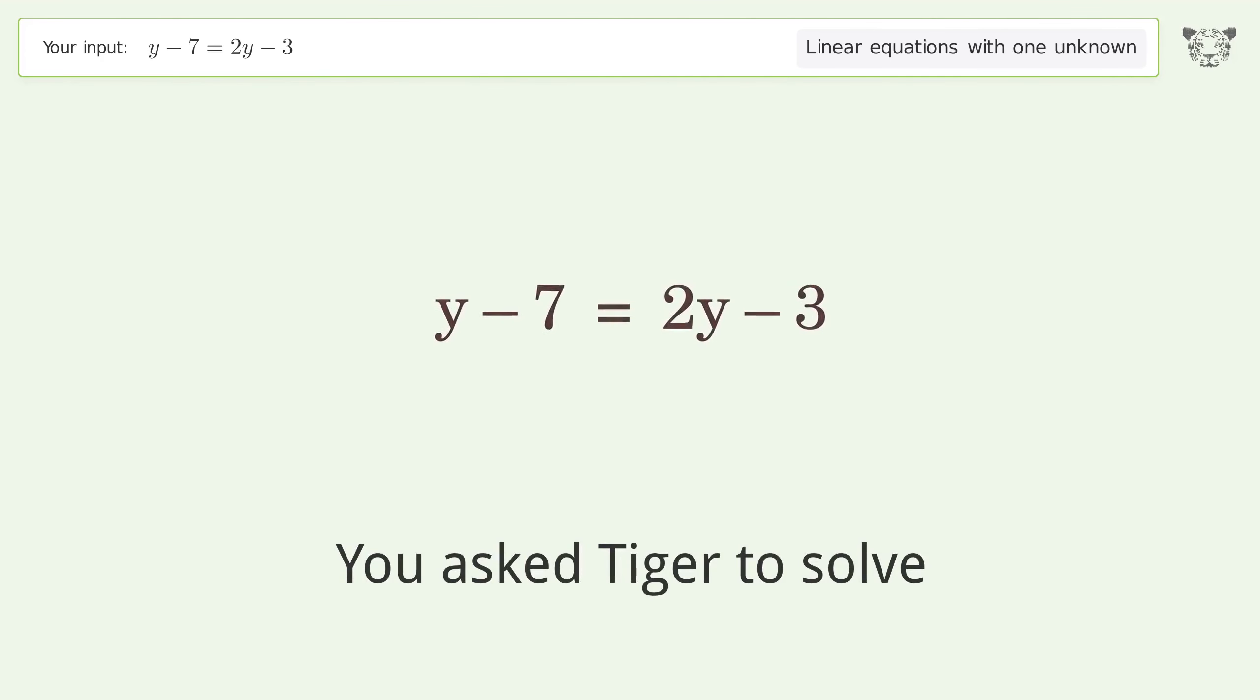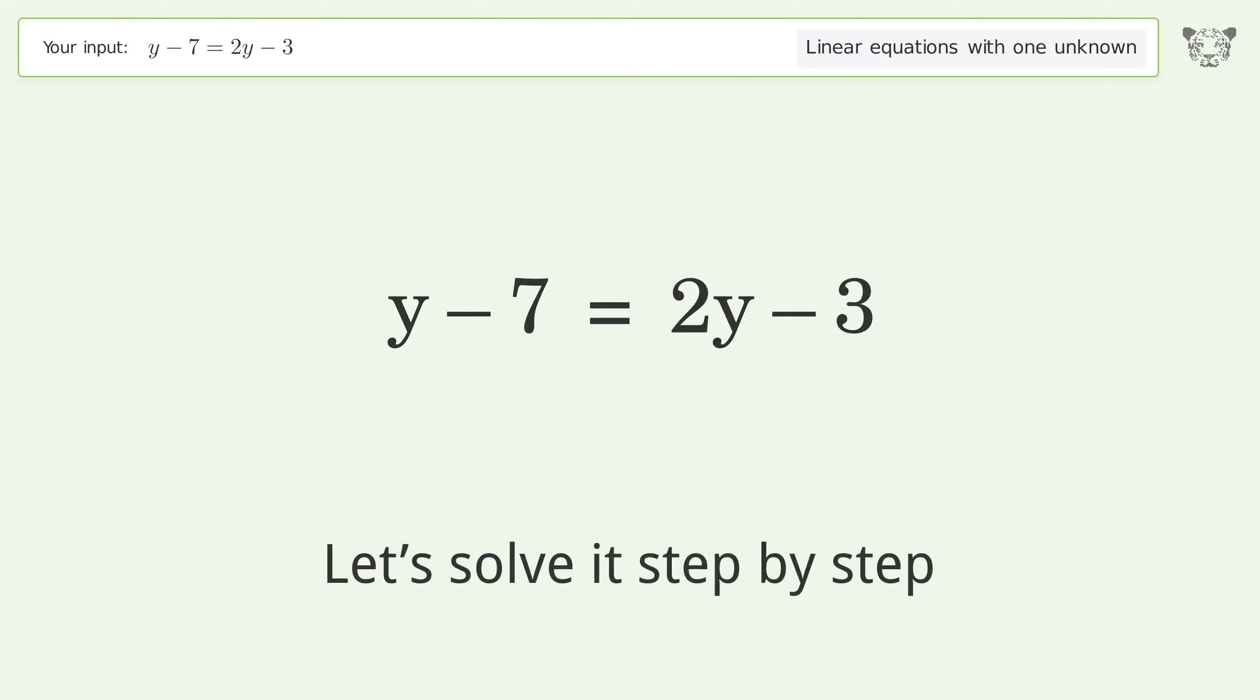You asked Tiger to solve. This deals with linear equations with one unknown. The final result is y equals negative 4. Let's solve it step by step.